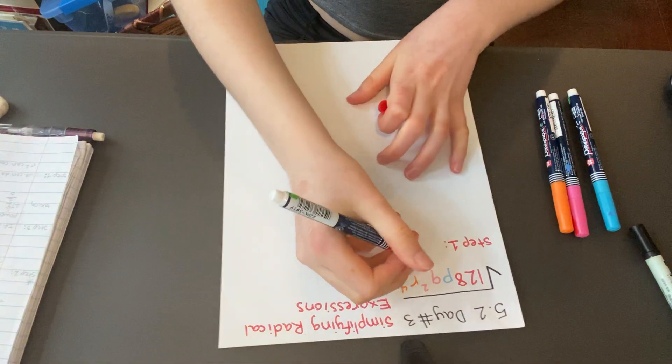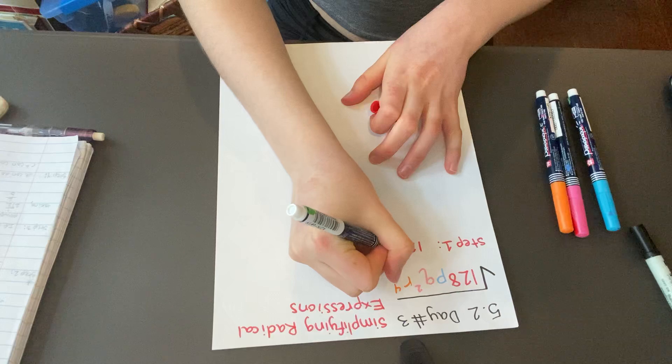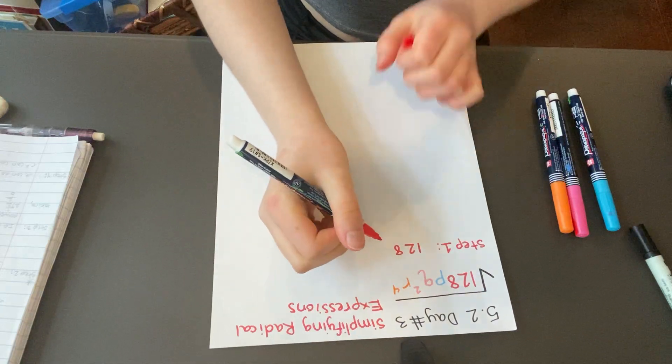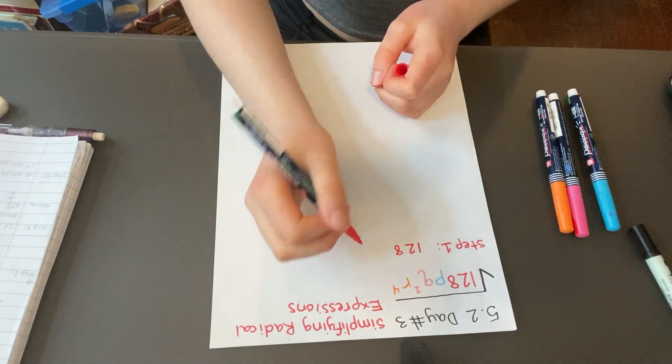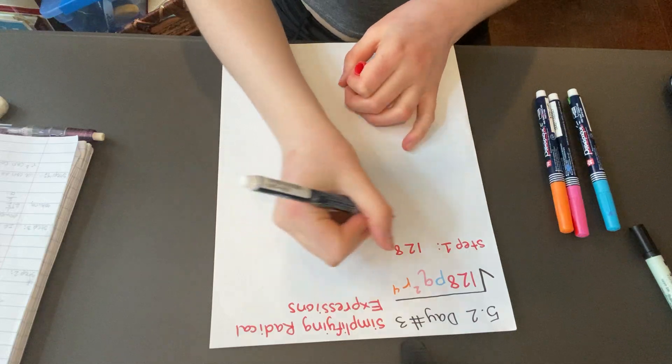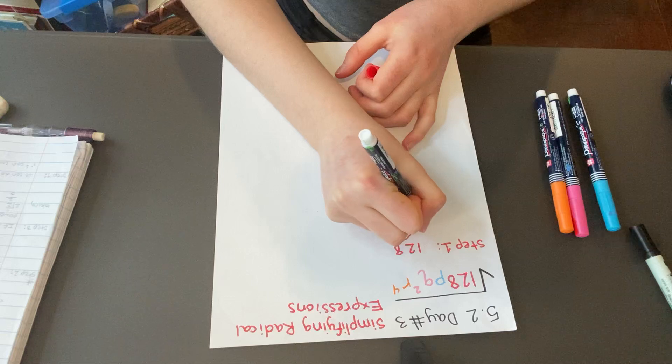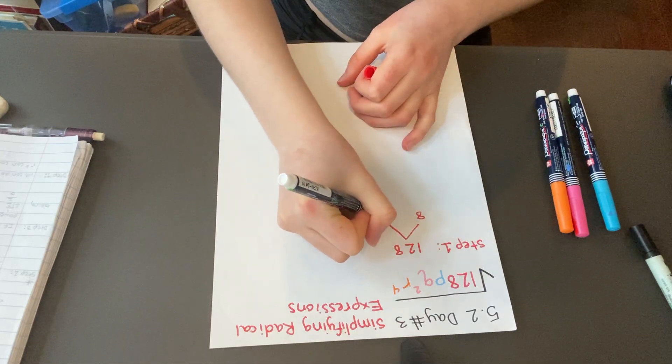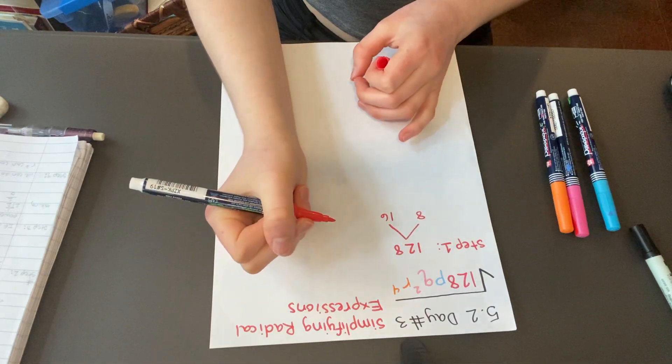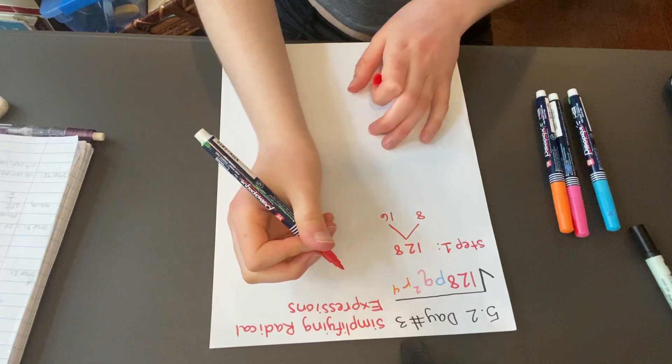Let's start by writing 128 at the top, and then we're going to think of two numbers that multiply to 128. Let's do 8 and 16. You can really do any two numbers that multiply to 128, but I chose 8 and 16.